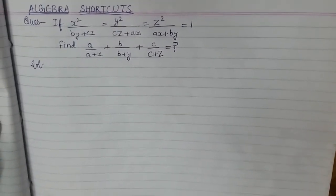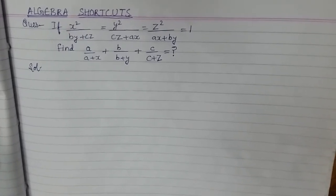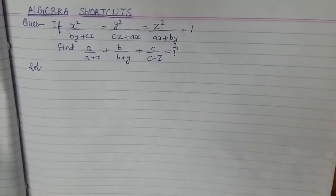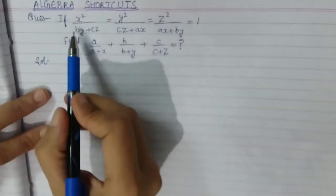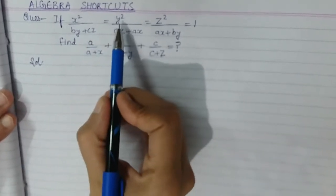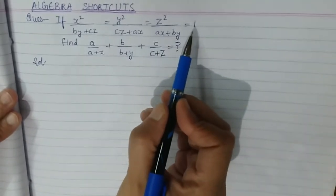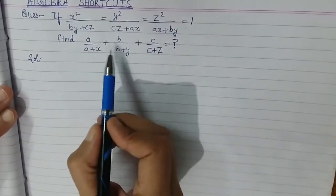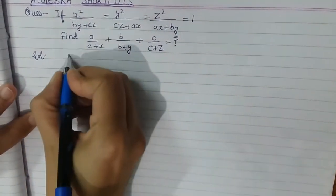Hello friends, in this video we talk about how to solve algebra problems very quickly. I use the basic method as well as the trick method. At the end of the video you will be able to solve this type of commonly asked question. Our problem is: x² divided by (by + cz) equals y² divided by (cz + ax) equals z² divided by (ax + by) equals 1. We have to find the value of a/(a+x) + b/(b+y) + c/(c+z).